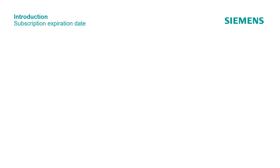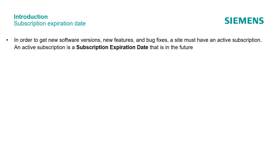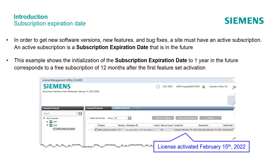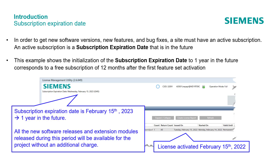The Subscription Expiration Date. In order to get new software versions, new features, and bug fixes, a site must have an active subscription. An active subscription is a subscription expiration date that is in the future. This example shows the initialization of the subscription expiration date to one year in the future, corresponding to a free subscription of 12 months after the first feature set activation. The license was activated on February 15, 2022. The subscription expiration date is one year in the future, on February 15, 2023.